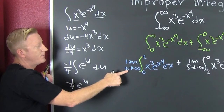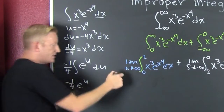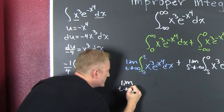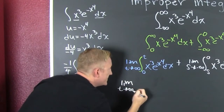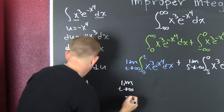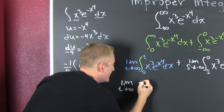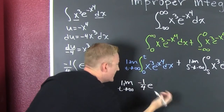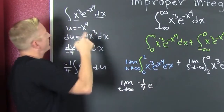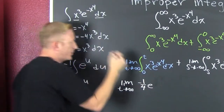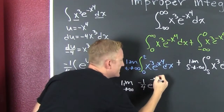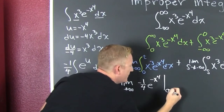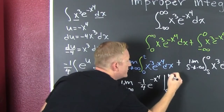We can plug that back in. So we're looking at the limit as t goes to infinity of minus one fourth e to the minus x to the fourth, evaluated from zero to t. And we're going to add that to the second piece.